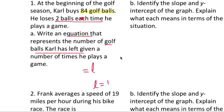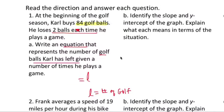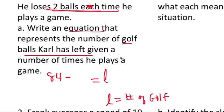Okay, that's left. I don't need to write the whole thing. He starts out with 84 and he loses, so that's minus two balls each. Each means times each time he plays P. P represents the number of times he plays golf.